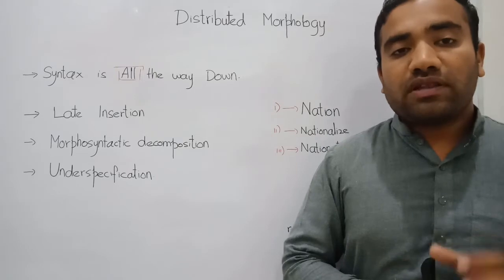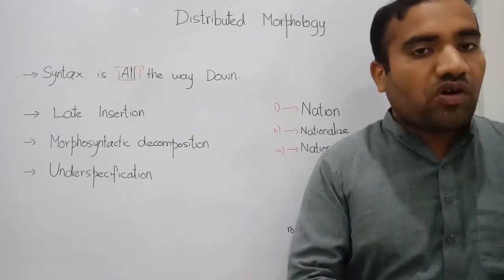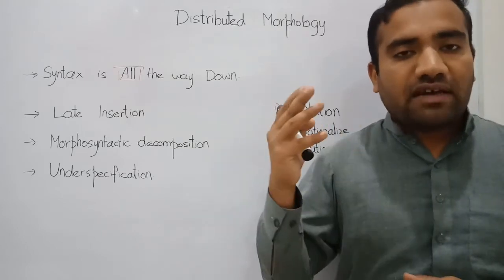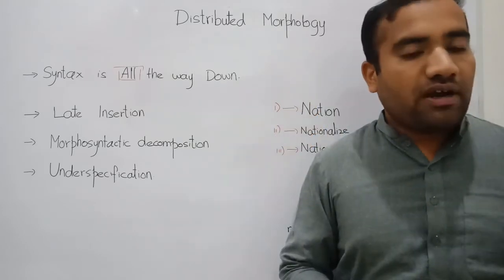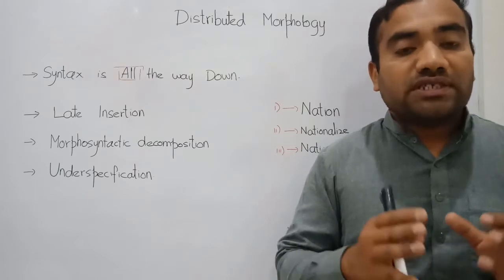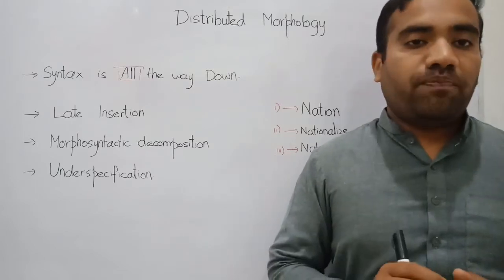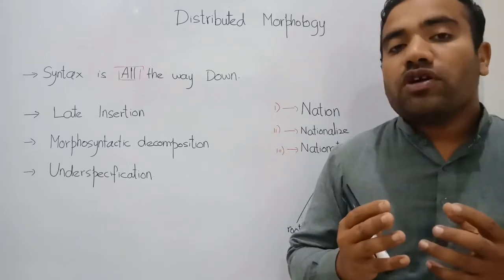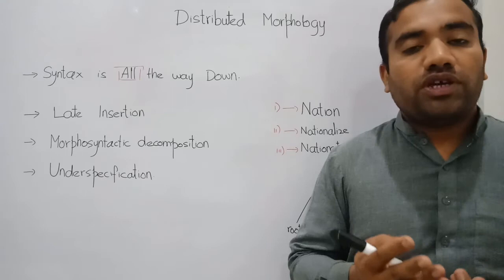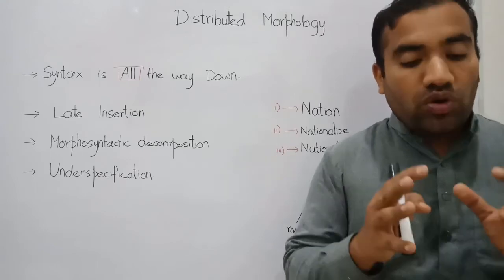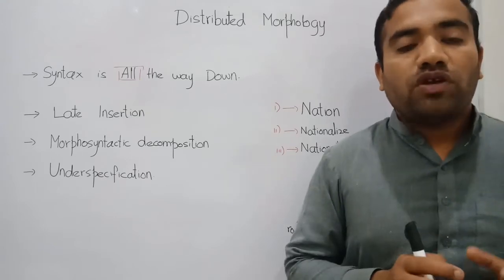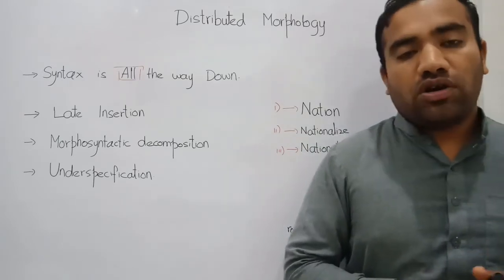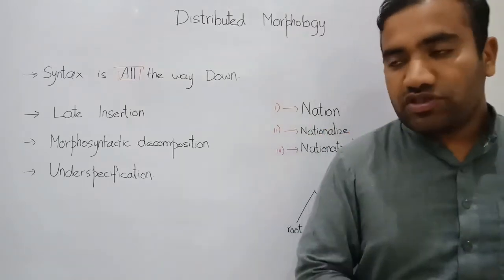Distributed morphology claims that syntax is all the way down, meaning all operations — either at the sentence level or the word level — have some structural dependency, some structure, some uniformity. There are three main cores of distributed morphology.